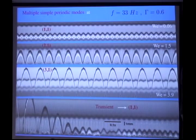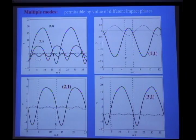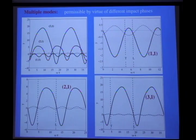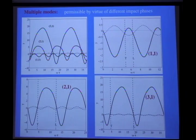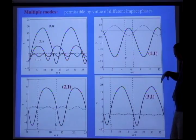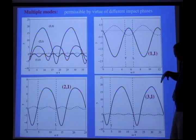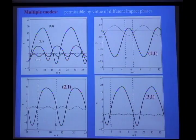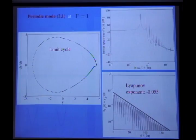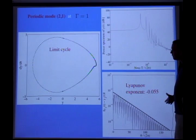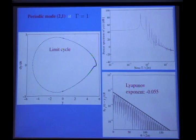We have the possibility of three different solutions by virtue of the different impact phases. These are the numerical solutions based on the model — height as a function of time — and you can compare the landing and takeoff times with experiments. They match pretty well. It's the difference in phase which allows you to rationalize the multiplicity — the fact that you can have more than one solution.